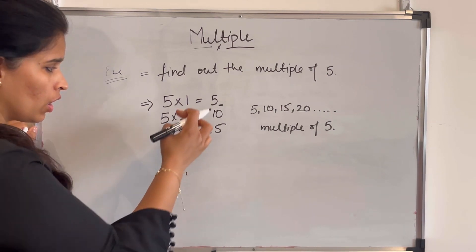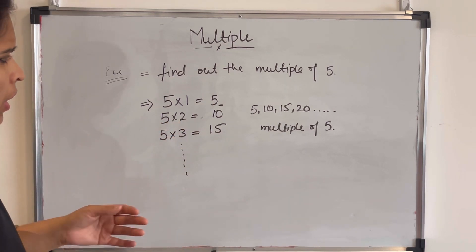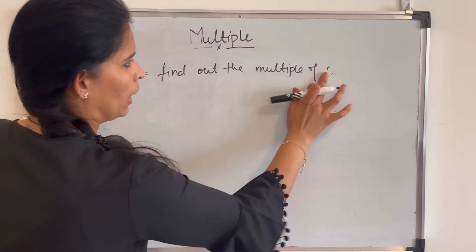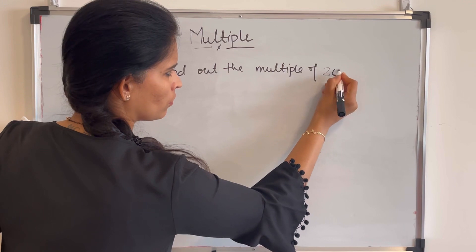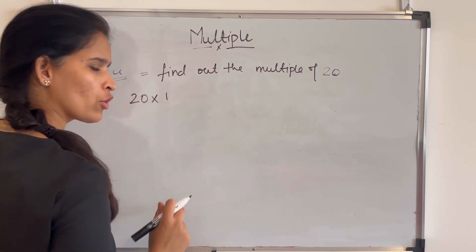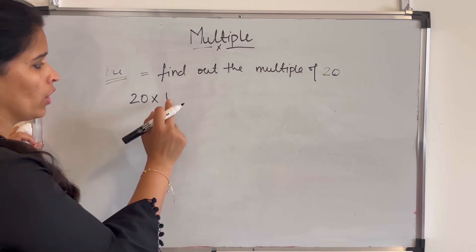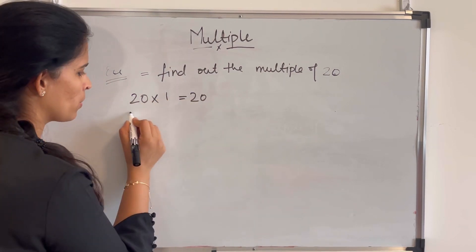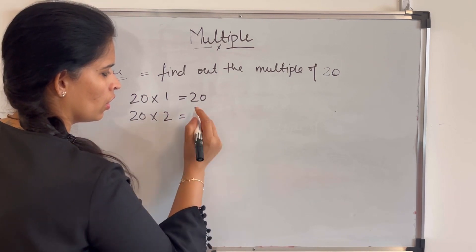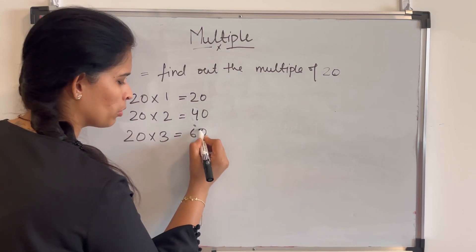We multiply the given number with each natural number to find its multiples. For example, to find multiples of 20: we multiply 20 by 1 to get 20 as the first multiple, then by 2 for the second multiple, then by 3 for the third multiple, and so on. Natural numbers start with 1.